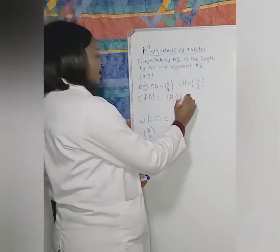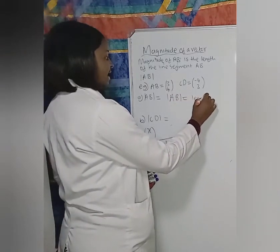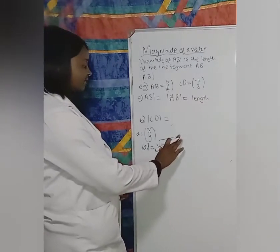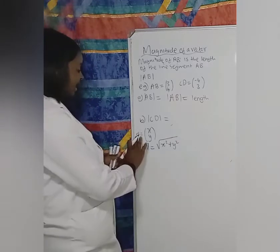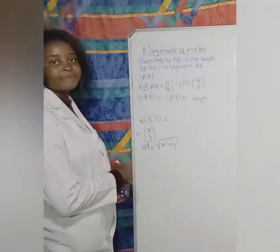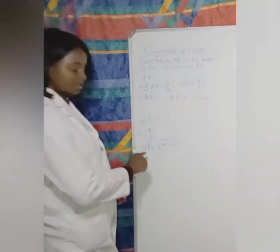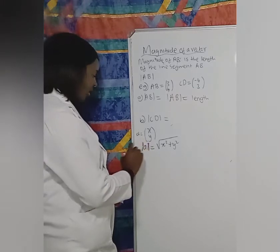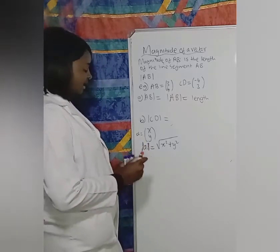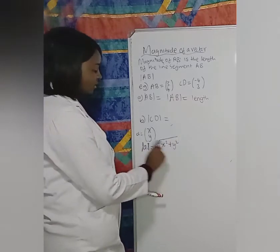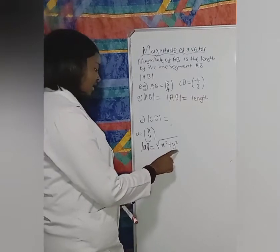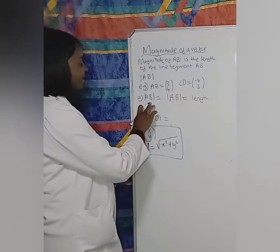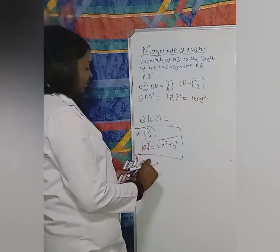Whenever they ask you for magnitude, it simply means you must calculate length. So how do we calculate length? Let's say we are given vector A which is (x, y) — remember the top value is the x value and the bottom value is the y value. When they ask the magnitude of vector A, we say it is the square root of x squared plus y squared.